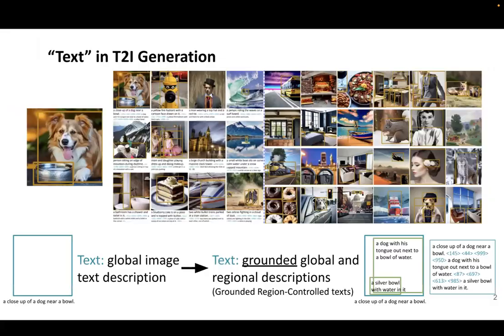Text-to-Image Generation aims to generate high fidelity images from natural language descriptions. We start by discussing the text in text-to-image generation. Text in most T2I studies is a piece of image description consisting of text words, such as 'a close-up of a dog near a bone,' similar to the output of an image captioning task. As an alternative, we explore expanding the text definition from text-only words to grounded region-controlled text, which seamlessly mixes grounded global and regional descriptions.